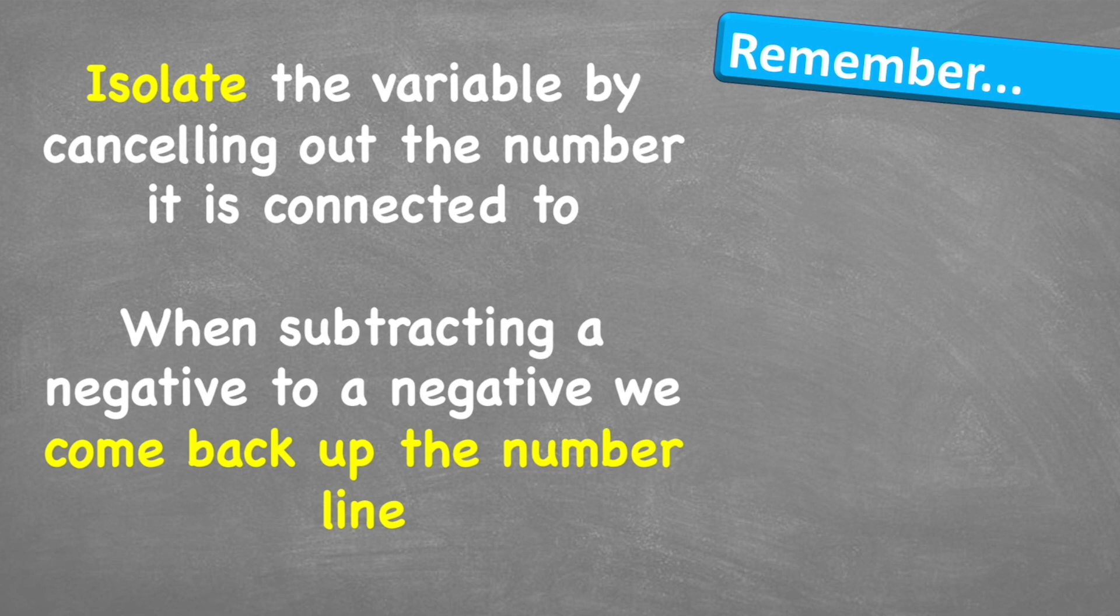Let's just think about what to remember. First, we're going to isolate the variable by cancelling out the number it's connected to by using the inverse operation. And when subtracting a negative to a negative, we're going to end up coming back up the number line, which can be a little bit hard to understand. If you need help, draw that number line. That'll help your mind understand exactly what you're doing.